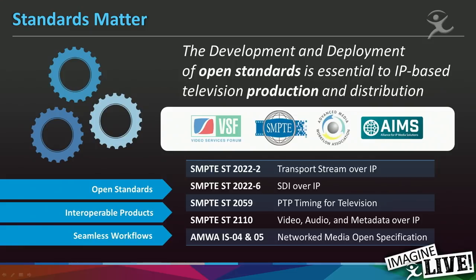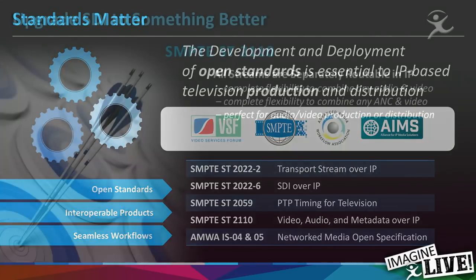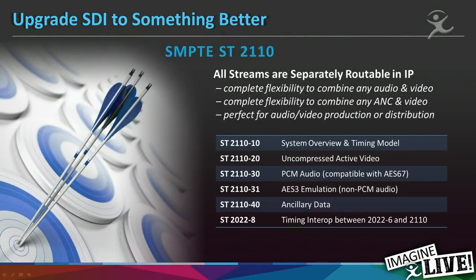These standards enable you to buy equipment from us and from other vendors and put it together with the full expectation that it's going to work properly — a vital part of having a successful transition. With SMPTE 2110, all the parts of the signal — the video, the different audio channels, the ancillary data parts — are routable separately in IP. They're all in one network cable, but they're all separate signals.